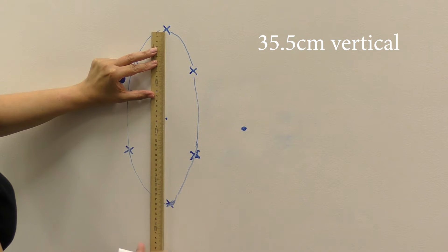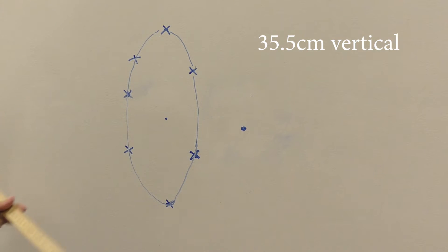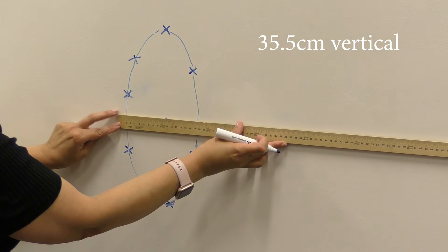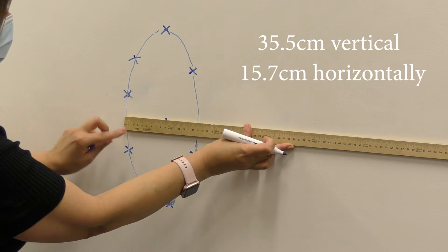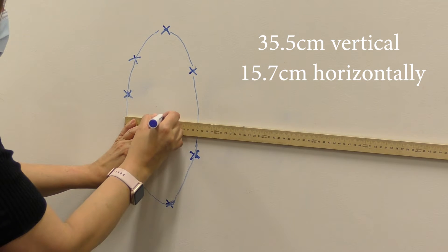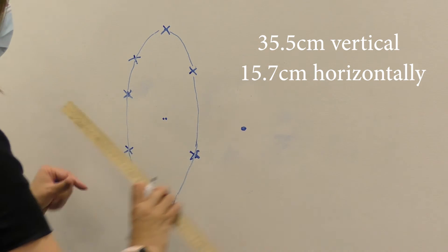Now the shape of the blind spot area that we got was oval, and a convenient way of describing the diameter of an oval is to use what's called a ferret diameter. And a ferret diameter is just an average of the longest diameter and the shortest diameter of that oval.